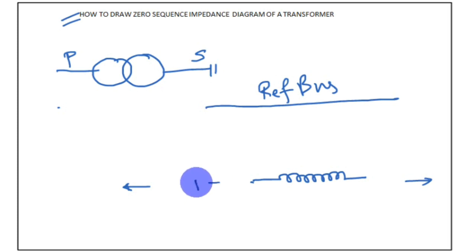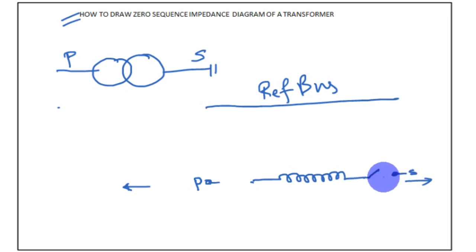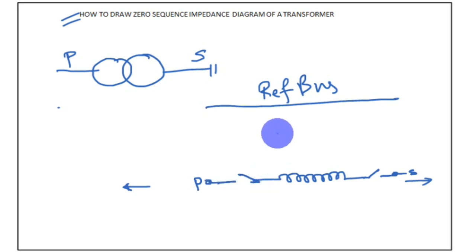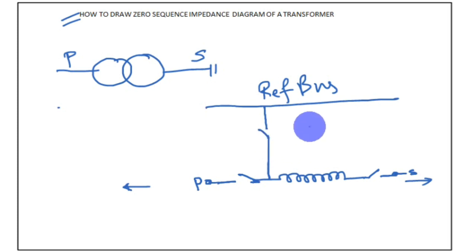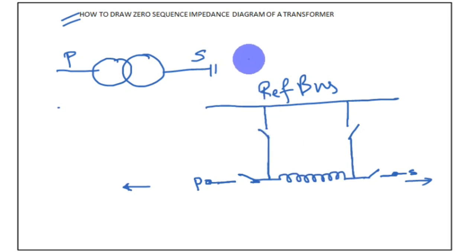To successfully draw the transformer impedance diagram, you put the primary terminal on this end and the secondary end on the other side. You also place a switch here at the primary end and another switch here at the secondary end. These are not actual switches, but they help you understand the zero sequence diagram of the transformer.